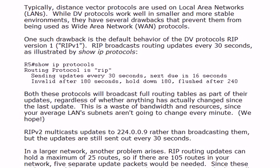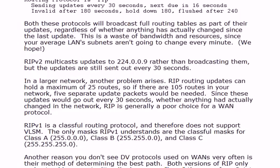That routing update has to be packaged and sent, sucking up bandwidth as it goes across the line. Downstream routers have to receive and unpack it — they can't just look at a RIP packet and know everything in there. They've got to open it, and when they see they already knew all that stuff from 30 seconds ago, they just discard it. That's a lot of overhead we really don't want on a wide area network.